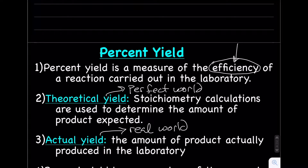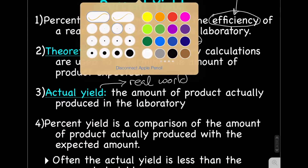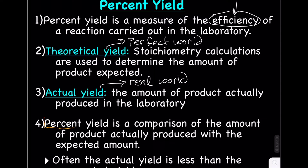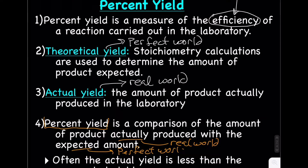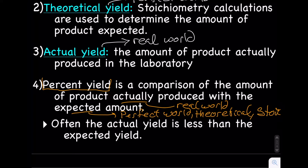Now we know what theoretical and actual yields are — what is percent yield? Percent yield is a comparison of the amount of product actually produced with the expected amount. What's actually produced is the real world versus the expected amount, which is the perfect world — the theoretical yield, calculated using stoichiometry. Often, the actual yield is less than the expected yield, so we usually make less than we think we're going to make.